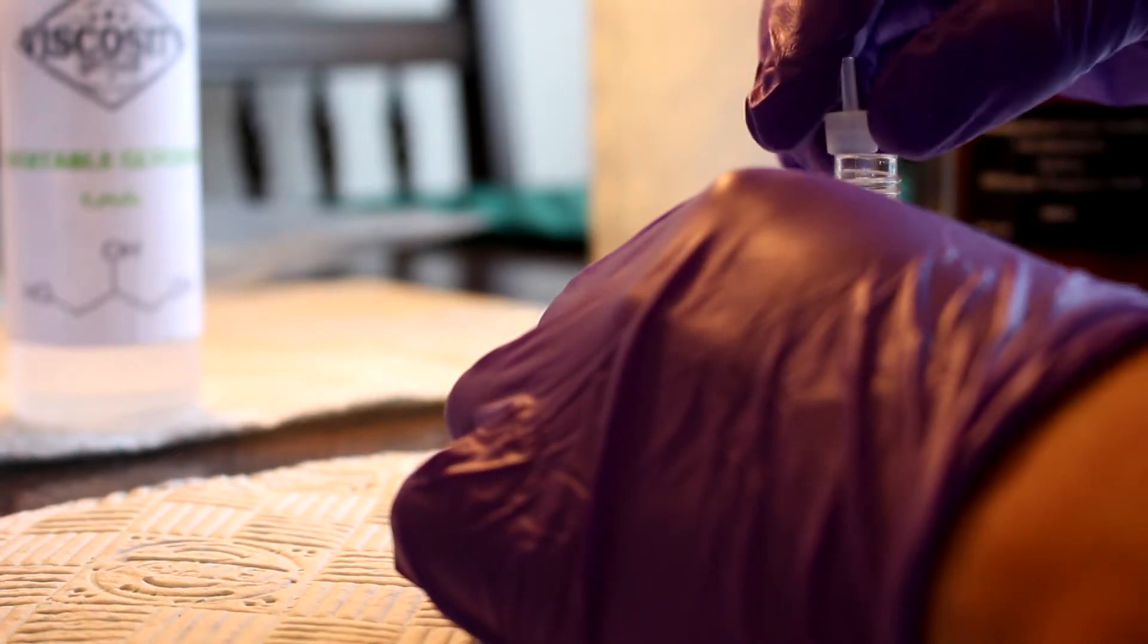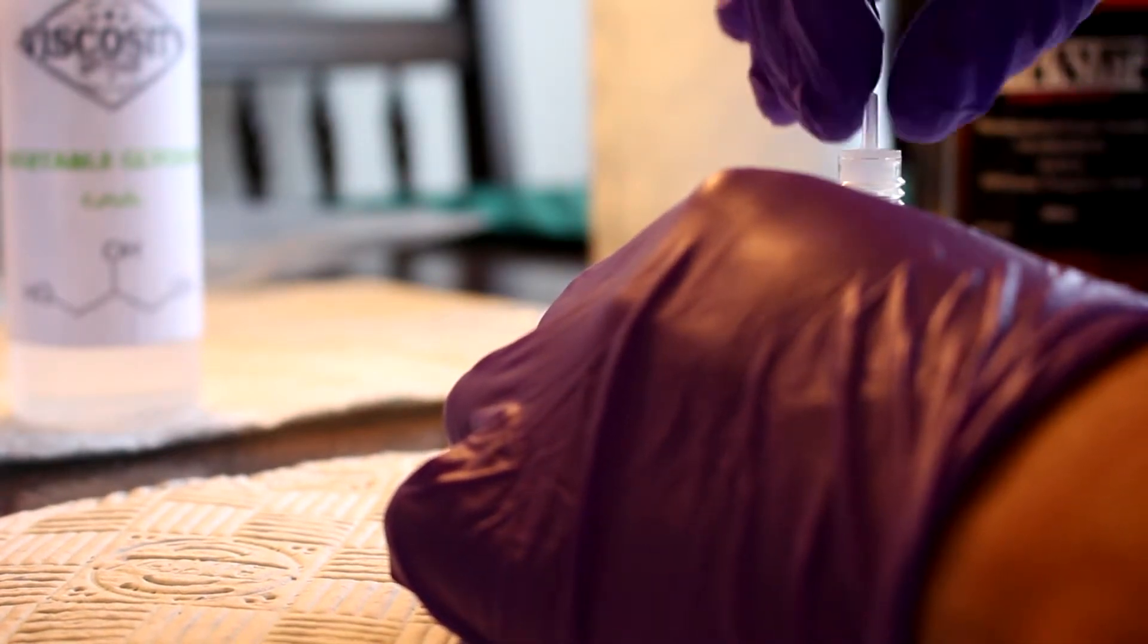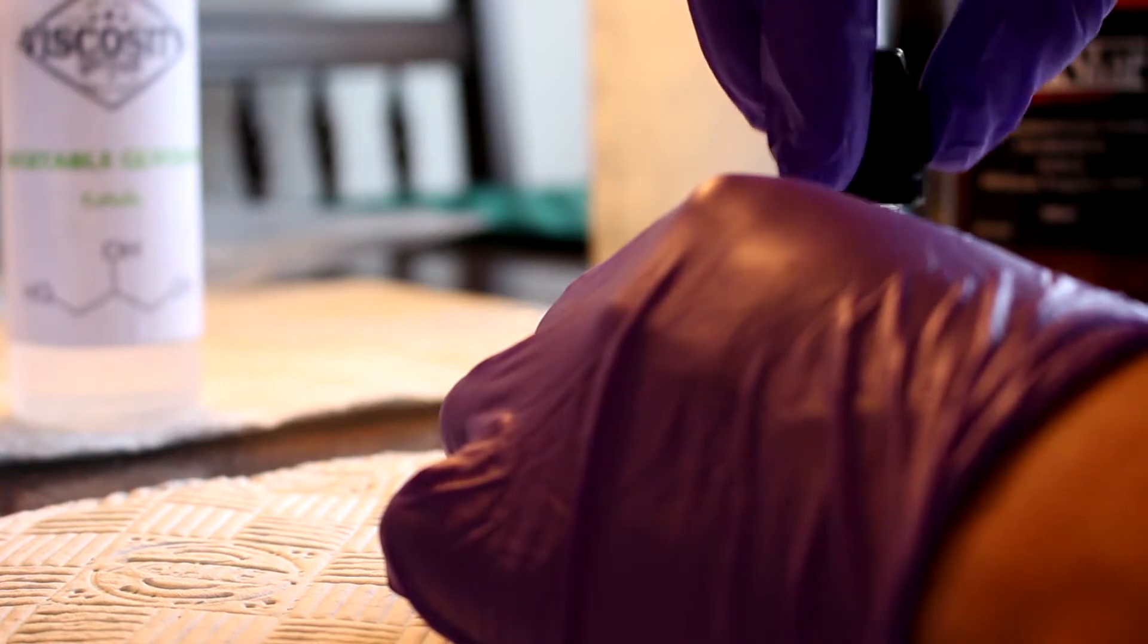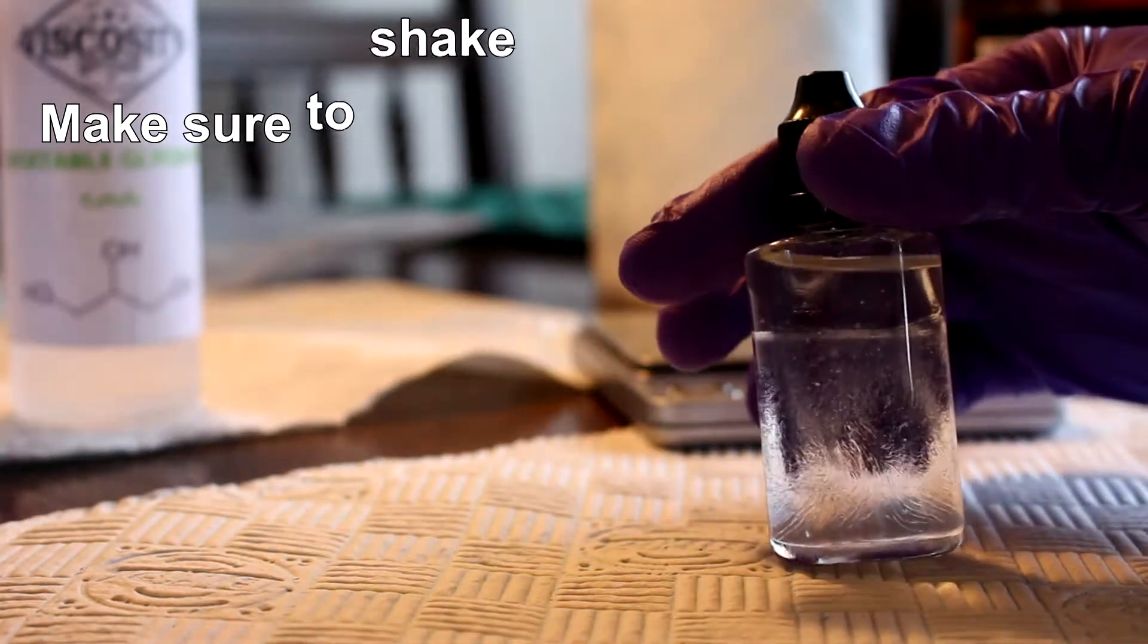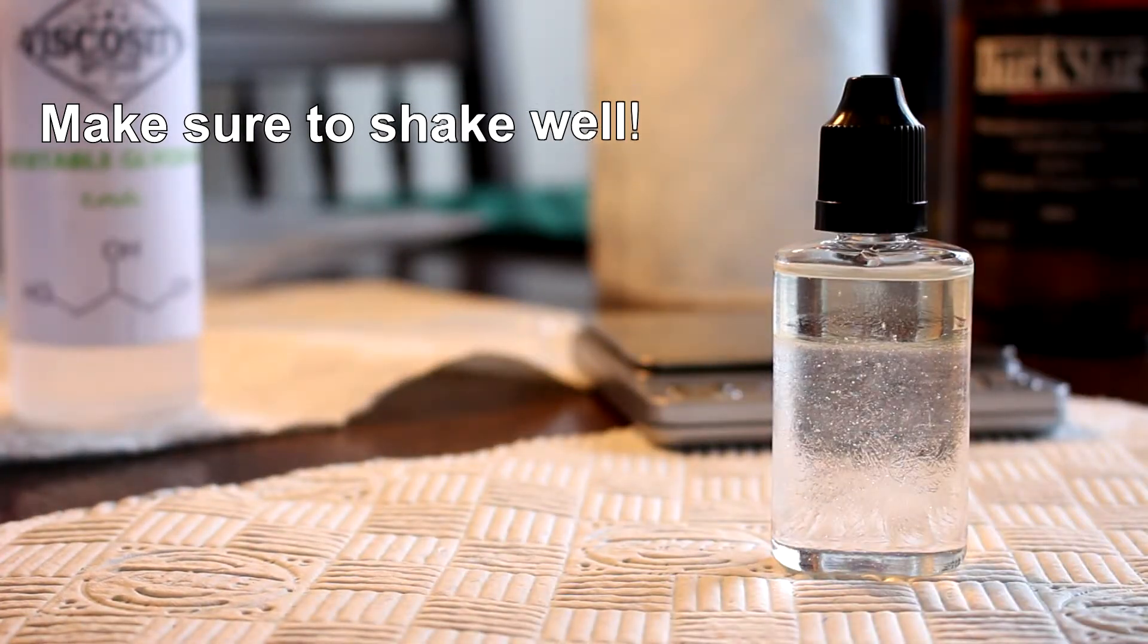Step 4 is just to label the bottle. I always include 4 pieces of information on my bottle labels. First is the name of the recipe. Second is the PG and VG ratio. Third is the nicotine concentration. And fourth is the date it was created.